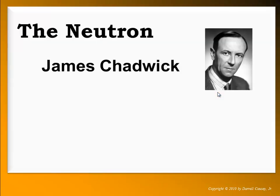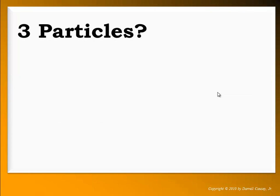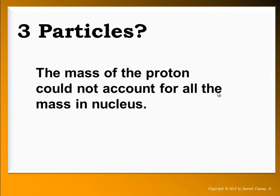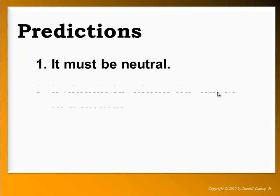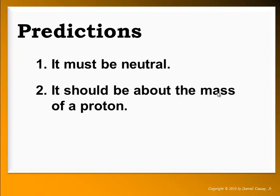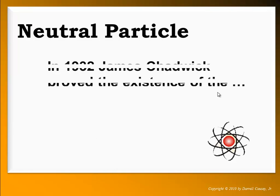James Chadwick proved the existence of the neutron. It wasn't until 1932 that we actually proved the neutron existed. Rutherford and many scientists before that believed there had to be another particle in the nucleus to account for all the nuclear mass, since the proton alone didn't account for it all. The hypothesized particle had to be: neutral, approximately the mass of a proton, and located in the nucleus. In 1932, James Chadwick proved the existence of the neutron.